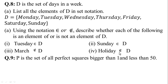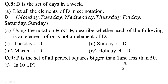In question number 9, P is the set of all perfect squares bigger than 1 and less than 50. In the first part, is 10 an element of P? According to the given condition, P is the set of perfect squares: 2² = 4, 3² = 9, 4² = 16. Since 10 is not a perfect square, 10 does not belong to P. The answer is no.